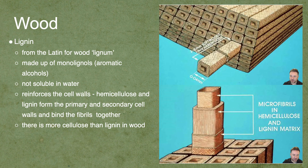Let's look at wood itself. Wood is made up of lignin, which comes from the Latin word for wood, lignum. Lignin is a chemical made up of monolignols, which are aromatic alcohols. They're not soluble in water — which is important, because a tree like a human has a lot of water in it, in its transport system and to keep cells firm. You don't want something soluble in water or it would just go squishy. Lignin reinforces the cell walls along with hemicellulose, forming the primary and secondary cell walls, binding the fibrils which make up the elements of wood together.